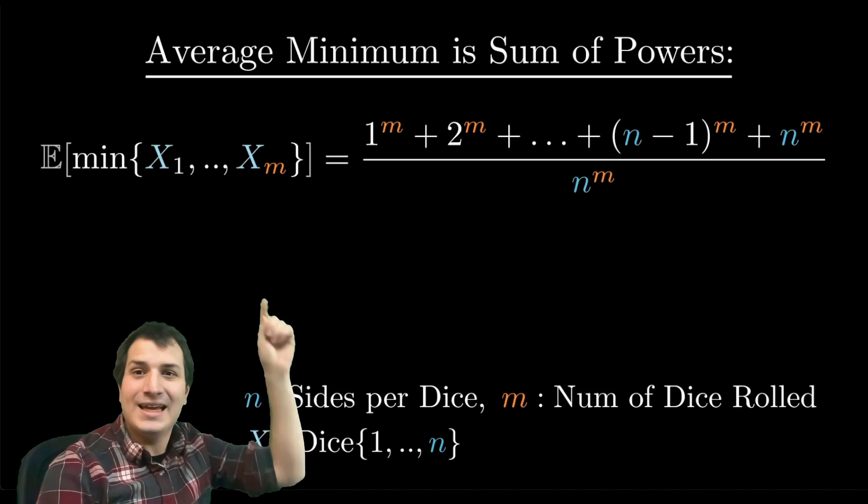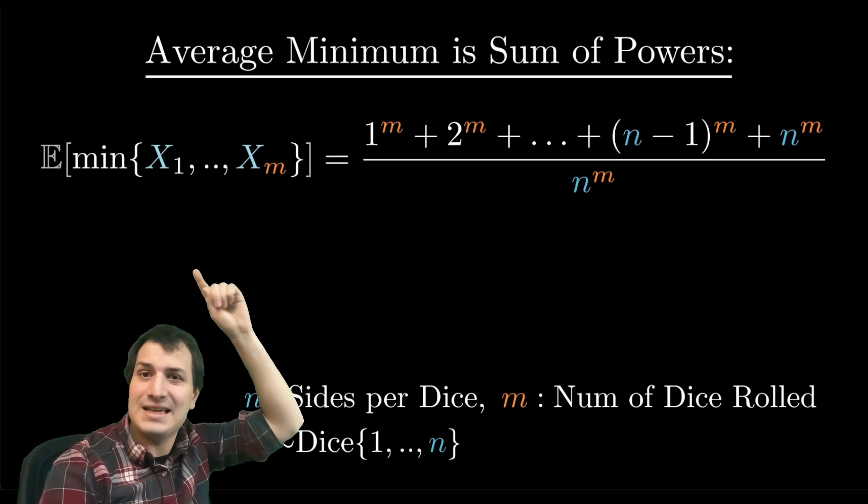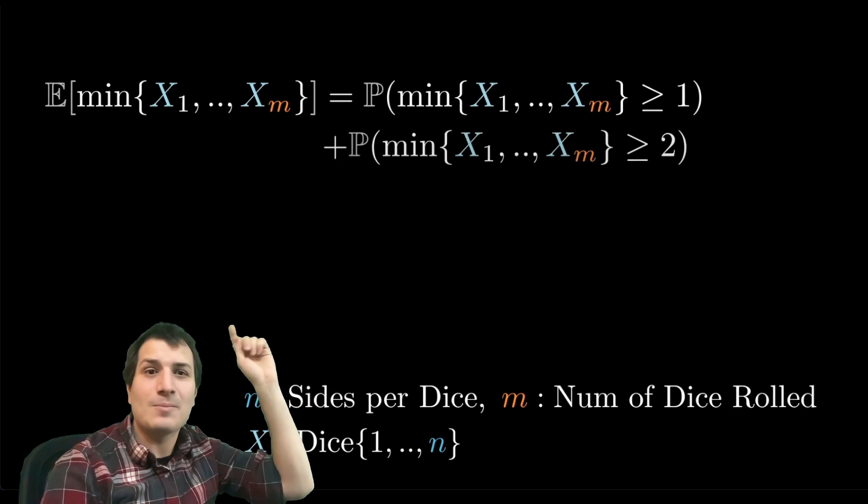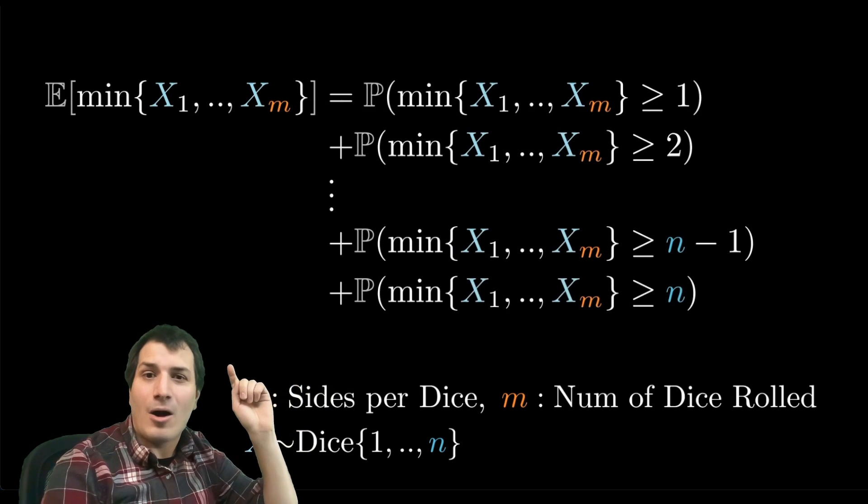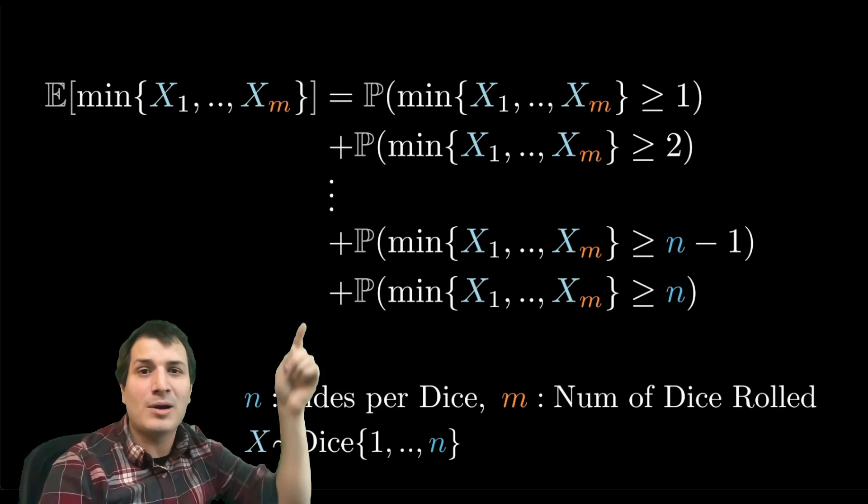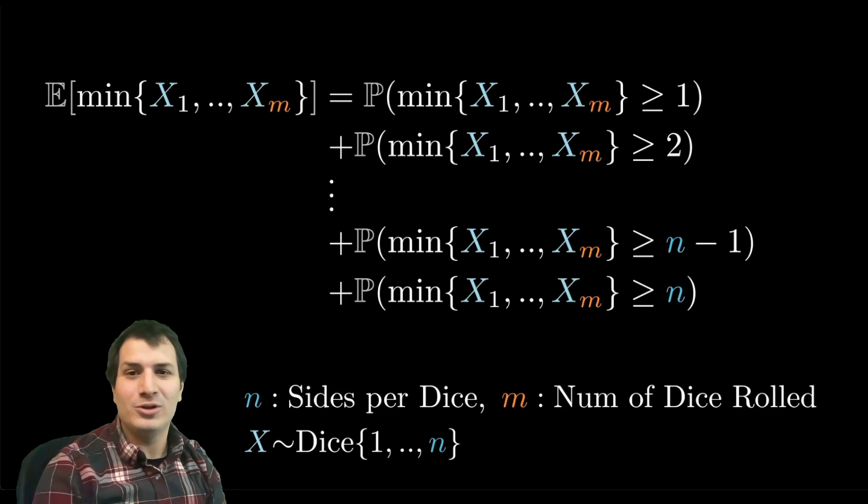The Darth Vader rule for probability tells you the expected value for integer valued random variables. If you want to do the average value, you add up the probabilities that it's bigger than 1, bigger than 2, all the way up to its maximum value, in this case n. So you add up all these probabilities that will give you the average value. I have a separate video on the Darth Vader rule if you want to check that out.